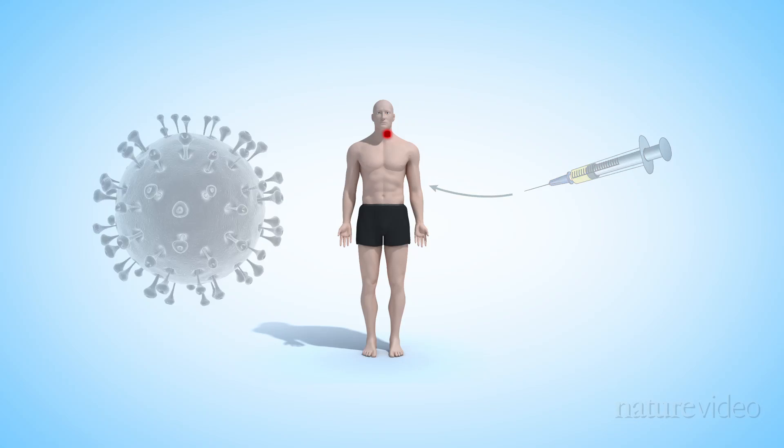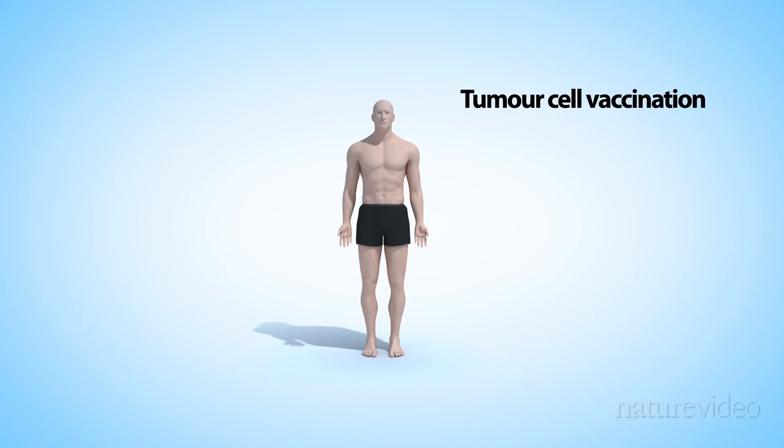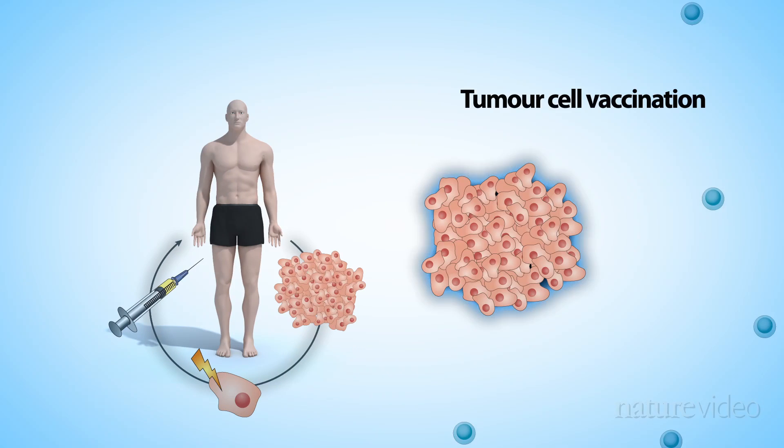It's also possible to vaccinate with a patient's own tumor cells. Some cells are extracted, irradiated to stop them from spreading, and then engineered to secrete activating growth factors. When the cells are injected back into the patient, the growth factors alert the immune system to the cancer.